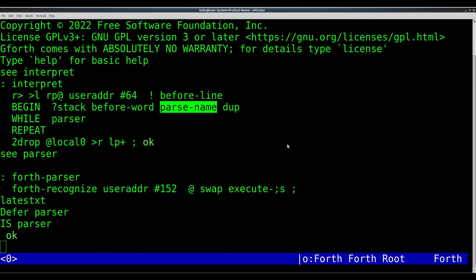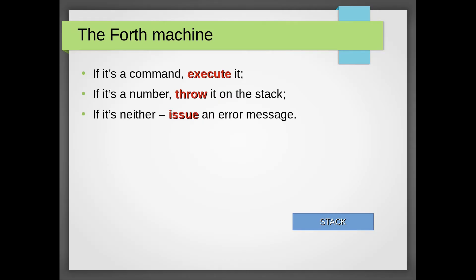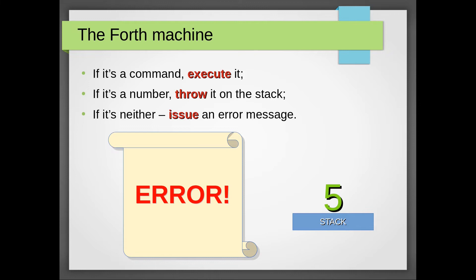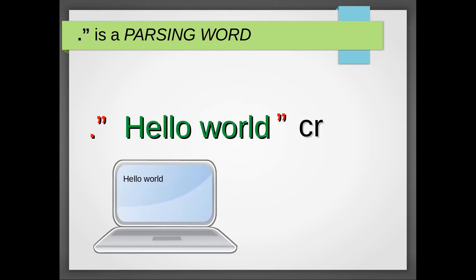Now Vanilla Forth has very little of that. Sure, it's got a tokenizer, which works by one simple rule: the next word is delimited by white space. And if you got that word, it's subject to three rules. If it's a word, execute it. If it's not a word, convert it to a number. If it's not a number, issue an error message. But then you say, we've got strings, don't we? And they're delimited by double quotes — and you'd be completely right. This is a special class of words called parsing words. Did you ever wonder why there has to be a space between dot-quote and the string itself? That's because dot-quote is a word. And it actively parses the input stream for double quote and displays the resulting string. The tokenizer has got absolutely nothing to do with it — dot-quote does it all by itself. And when it finishes, control is transferred back to the tokenizer, which goes on to parse the next white-space-delimited word.